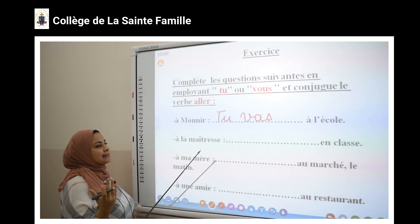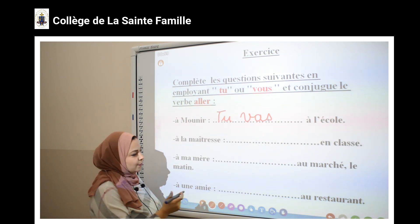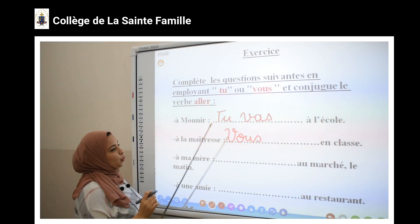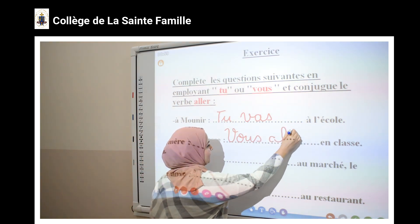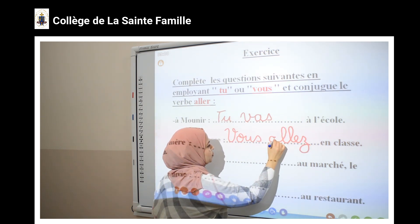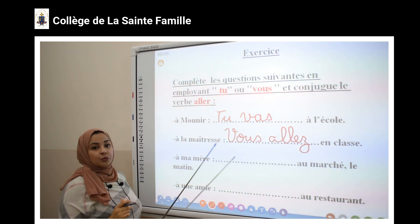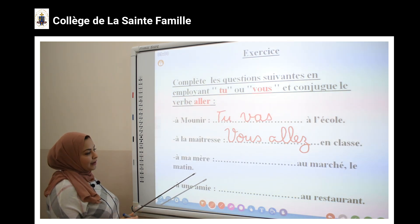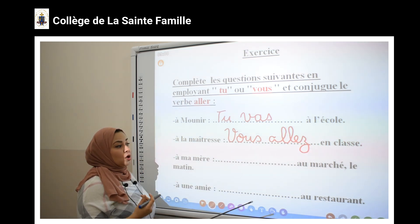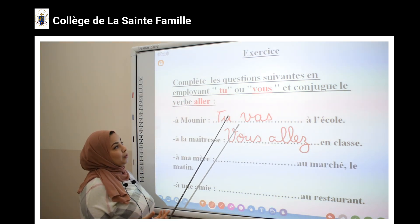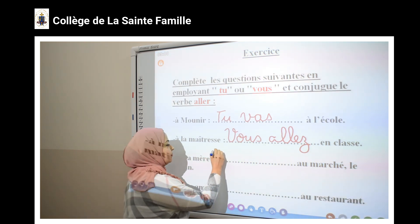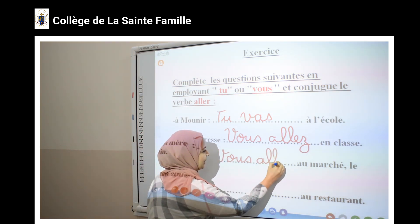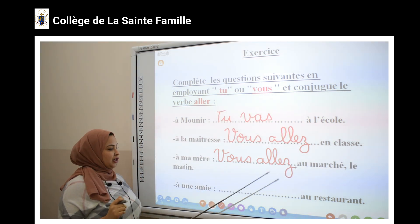La deuxième phrase : c'est une personne âgée. Il faut respecter ma maîtresse. Alors, j'utilise le pronom « vous ». Je conjugue le verbe « aller » avec « vous » — c'est « vous allez ». « Vous allez en classe, madame ? » La troisième phrase : je parle à ma mère. Il faut respecter ma mère, j'utilise le pronom « vous ». « Vous allez au marché le matin. »